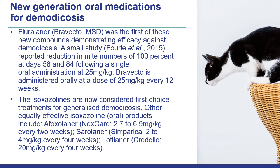The first of the new compounds, called isoxazolines, was fluralaner — marketed as Bravecto — which was the first demonstrating efficacy against demodicosis. Shortly after, other molecules were marketed and proven effective including afoxolaner (Nexgard), sarolaner (Simparica), and lotilaner (Credelio). We recommend that during treatment with these molecules, skin scrapings are continued roughly every four weeks to monitor effective treatment of the condition.